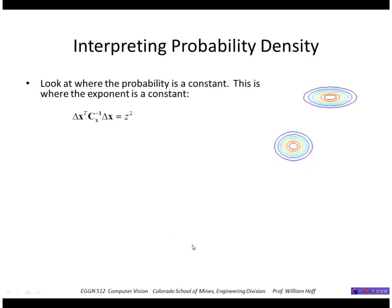And I'll just call that z squared here. So picking different values of z correspond to different contours of that Gaussian.